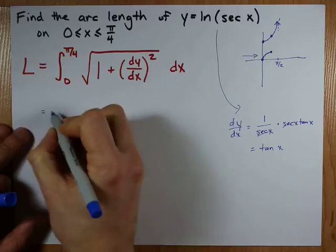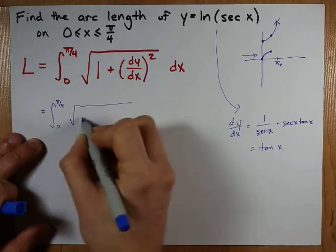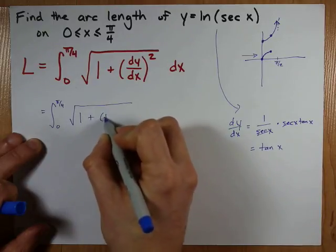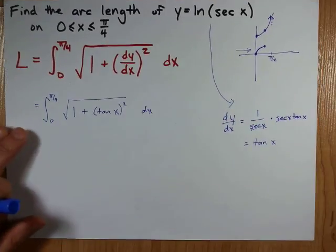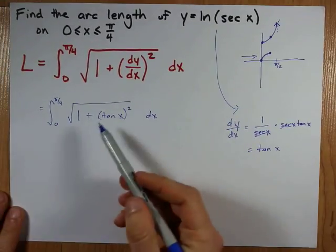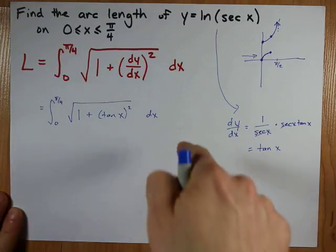So, the arc length here is the definite integral from 0 to pi over 4 of the square root of 1 plus tan x squared dx. Now, that still probably looks a little impossible unless you're a big fan of trig identities.